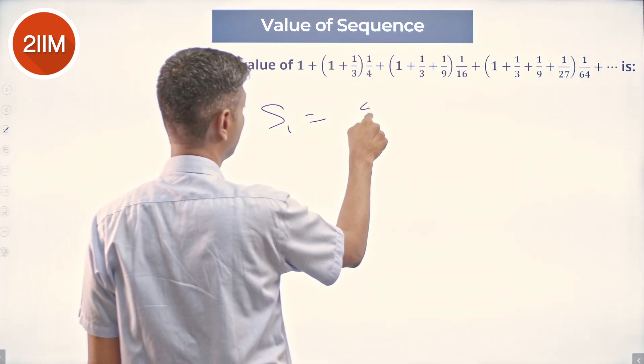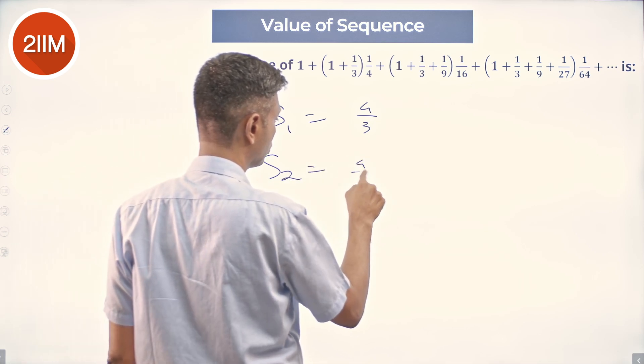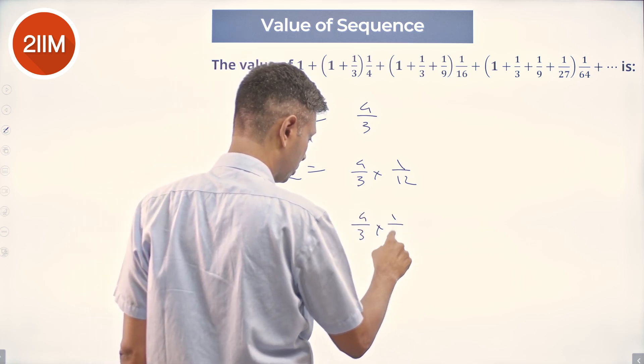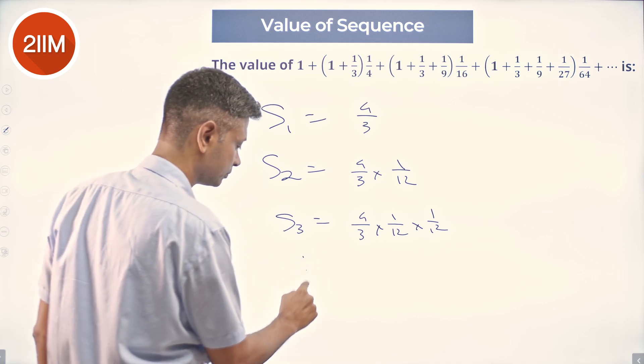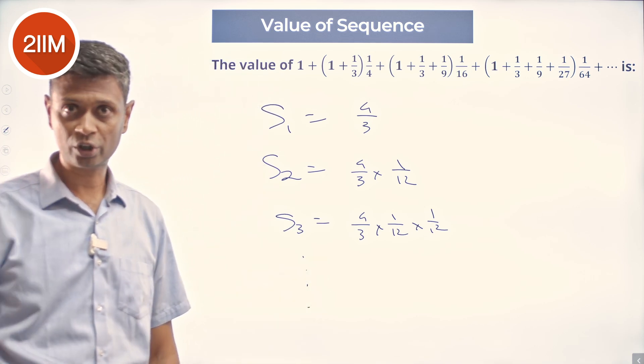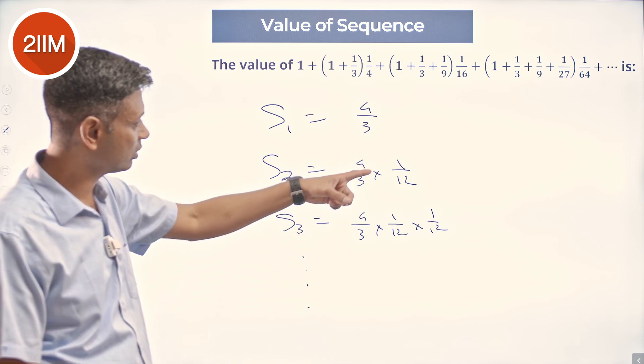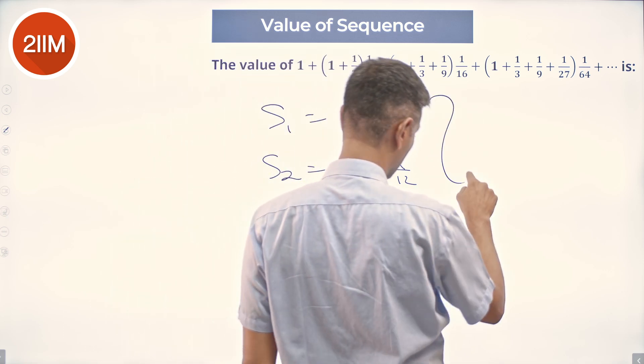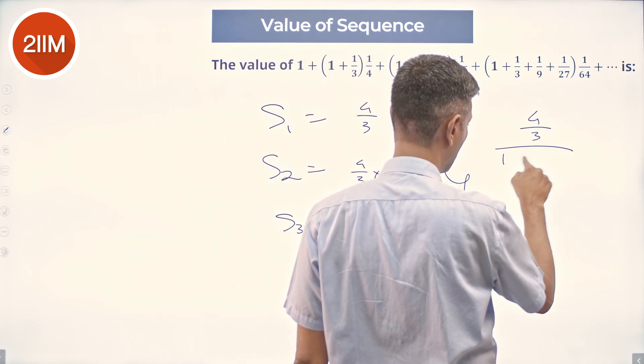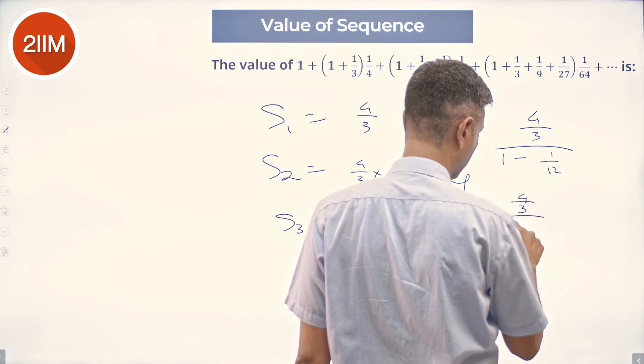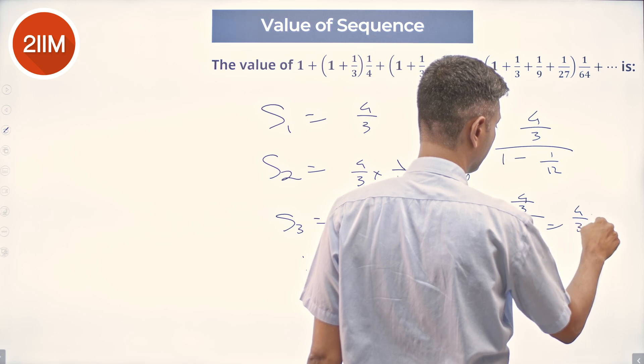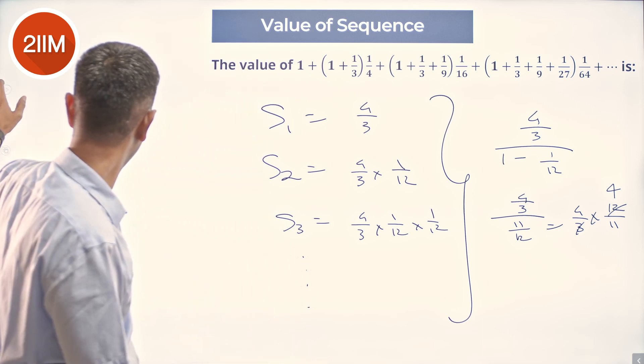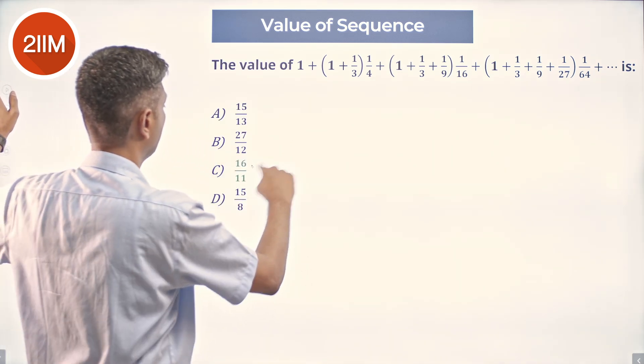S1 is 4/3, S2 is 4/3 into 1/12, S3 is 4/3 into 1/12 into 1/12. This is again a geometric progression, again an infinite progression, again one with first term 4/3 and common ratio 1/12. So sum of this whole thing is (4/3)/(1 minus 1/12) = (4/3)/(11/12) = 4/3 into 12/11, which is 16/11. And hopefully that is there among our choices. At least it is there with the right answer.